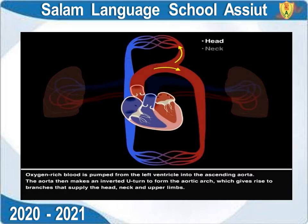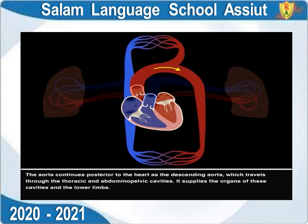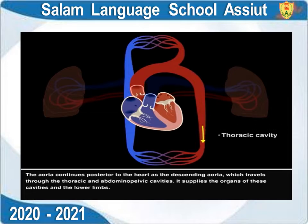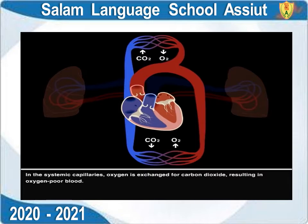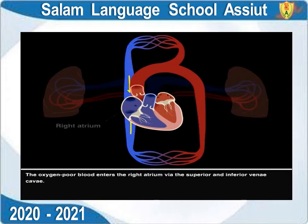The aorta makes an inverted U-turn to form the aortic arch, which gives rise to branches that supply the head, neck, and upper limbs. The aorta continues posterior to the heart as the descending aorta, which travels through the thoracic and abdominal-pelvic cavities, supplying organs and the lower limbs.